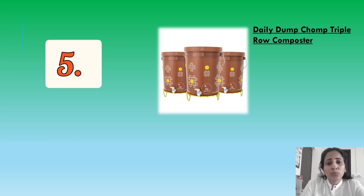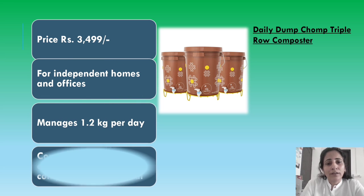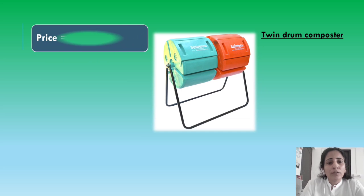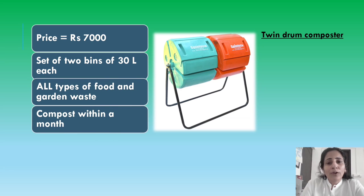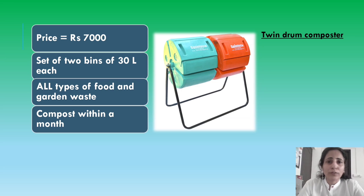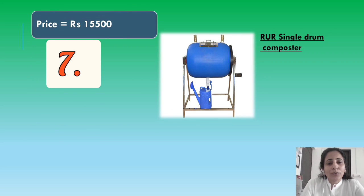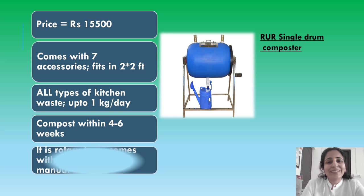For those who have more space, there is the Daily Dump Chomp Triple Roll Composter, priced at 3,500 rupees, which manages more waste than the earlier options. For those looking beyond bins, there is the Twin Drum Composter in the range of 7,000 rupees — a set of two bins rotated manually. Links to all composting options are in the description box; this is just to make you aware of these products, not to popularize one over another. There is also the RUR Single Drum Composter, priced at 15,000 rupees, which comes with many accessories and claims compost is ready within six weeks at most.